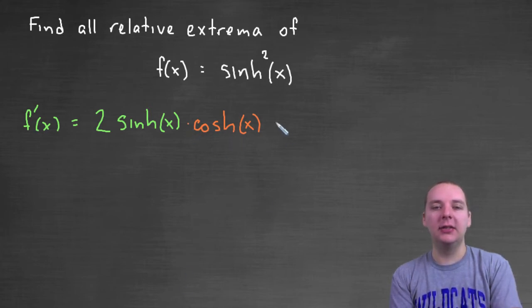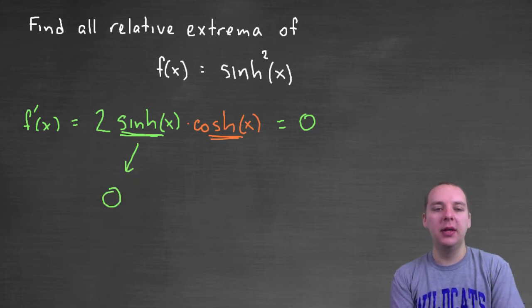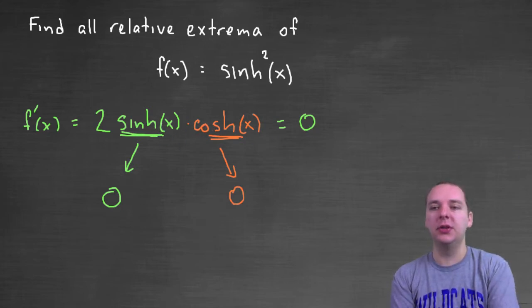This has to be either equal to zero or not defined. Hyperbolic sine's domain is all real numbers, and hyperbolic cosine's domain is all real numbers, so there's not going to be any place where this derivative is not defined, but there might be places where this equals zero. The only way a product can be zero is if one of these terms are zero.